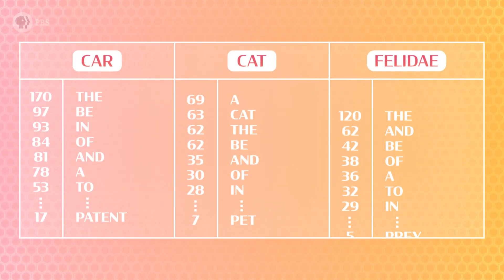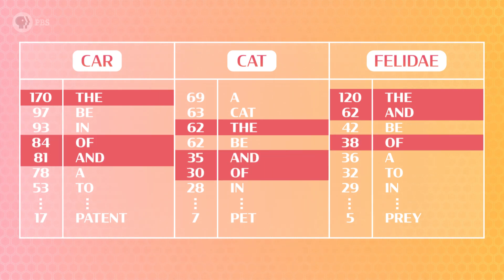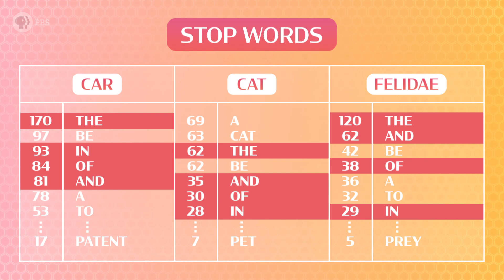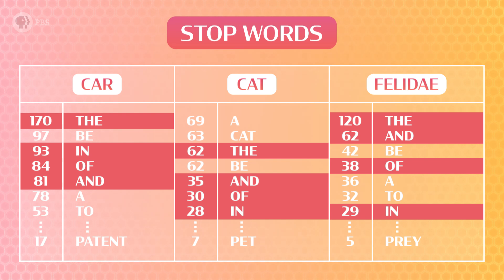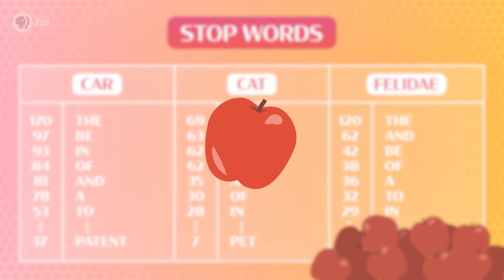And a lot of the top words are the same: the, and, of, in. These are all function words, or stop words, which help define the structure of language and help convey precise meaning. Like how "an apple" means any apple, but "the apple" specifies one in particular. But because they change the meaning of other words, they don't have much meaning by themselves. So we'll remove them for now and simplify plurals and conjugations.